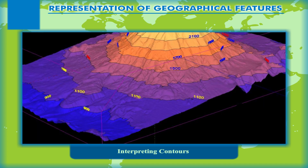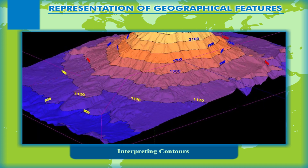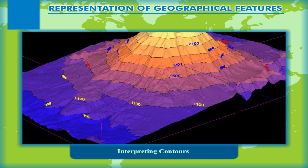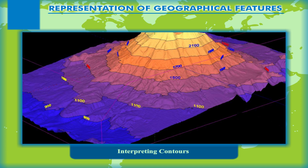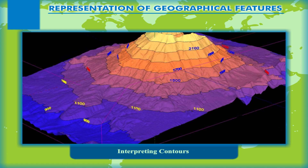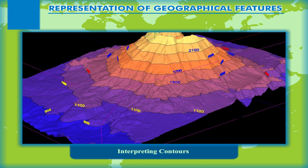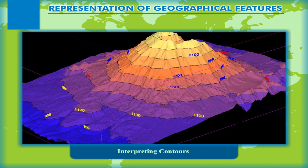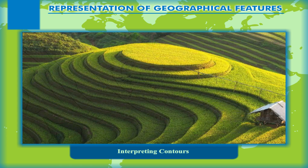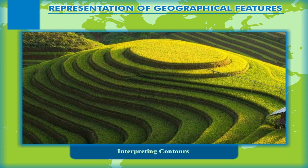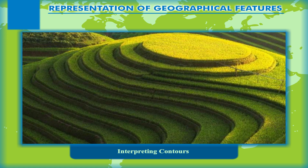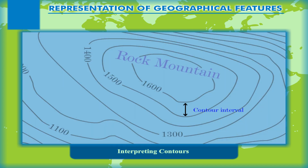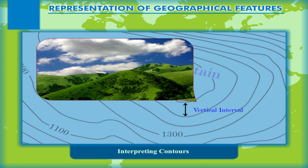Interpreting Contours. The method of showing the relief with the help of contours is one of the most accurate and standard methods. A contour is an imaginary line which joins the points of places having the same height above the mean sea level — in other words, a line of constant height above the mean sea level. Contours are drawn on the basis of actual surveys done in the field. The difference between the values of any two successive contours is known as the contour interval, or the vertical interval (VI).